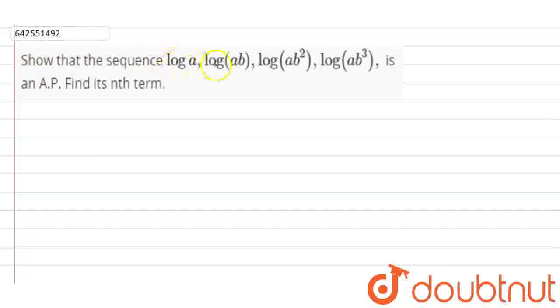Show that the sequence log a, log(ab), log(ab²), log(ab³) is an A.P. Find its nth term.